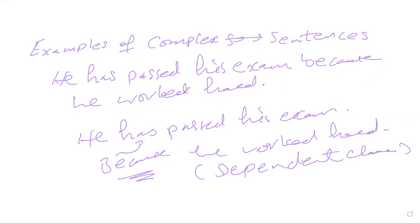So that means complex sentences have two clauses: an independent clause and a dependent clause, and they are combined with subordinators. I hope you've understood what a complex sentence is. If you have any confusion, you can ask me during the live session. Thank you very much. Take care of yourself.